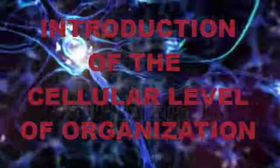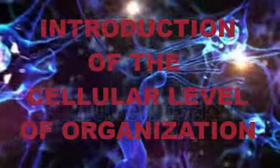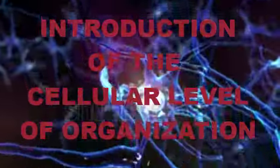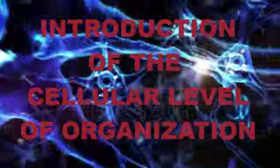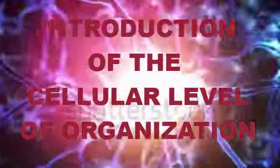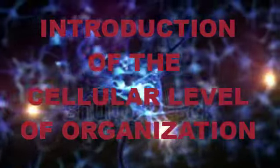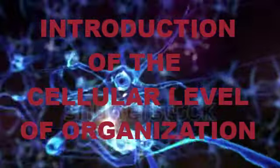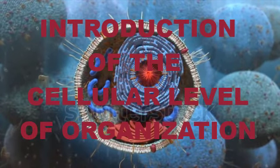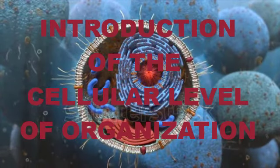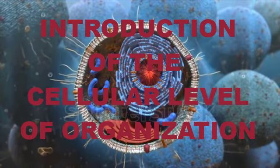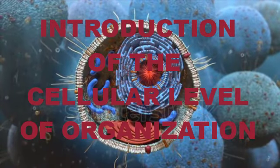Ideas about cell structure have changed considerably over the years. Early biologists saw cells as simple membranous socks containing fluid and a few floating particles. Today's biologists know that cells are infinitely more complex than this. There are many different types, sizes, and shapes of cells in the body. For descriptive purposes, the concept of a generalized cell is introduced, which includes features from all cell types.